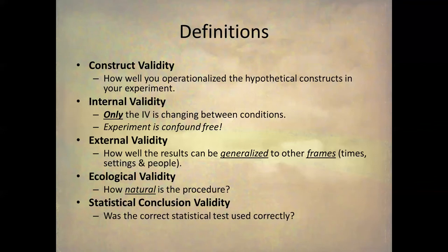External validity is how well the results can be generalized to other frames — taking the results of your study and applying them to different times, different settings, and different people than those in your experiment. Ecological validity is how natural the procedure is in the experiment — how true to life the experiment is to the subjects in it. And finally, statistical conclusion validity refers to whether the correct statistical tests were used, though we're just going to be touching on that.